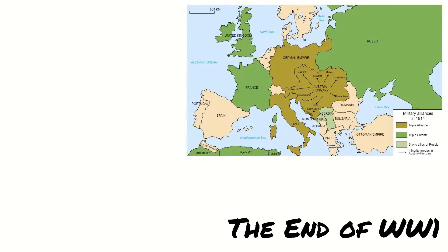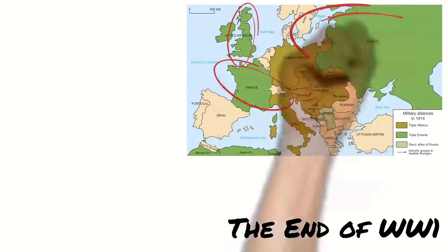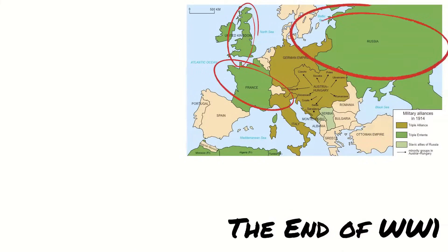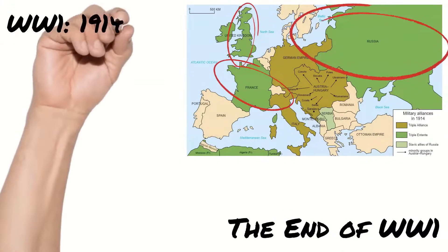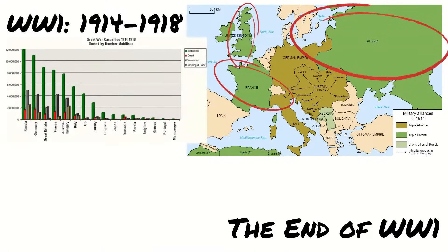Germany had to face the combined might of the Allies — Britain, France, Russia and later the USA. The war lasted four years from 1914 to 1918 and during that time two million German troops were killed and four million were wounded.